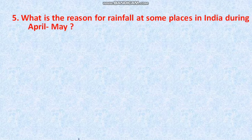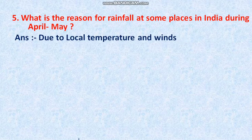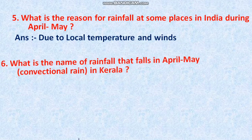Question 5: What is the reason for rainfall at some places in India during April and May? We consider April and May as the summer season, but we still find rainfall in some places during this time. The answer is: due to local temperature and winds, rainfall occurs during the months of April and May.